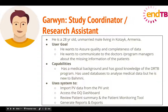The next persona is Garvain, a 28-year-old study coordinator based in Kotayk, Armenia. His main goal is to assure quality and completeness of data, communicating to doctors and program managers about any missing data. He has a medical background and sound knowledge of the DR-TB program, has used databases for analyzing medical data, but is new to Bahmni. He uses the system to import data from the PV unit, access the DQ dashboard, patient summary, and patient monitoring tool, and generate reports and exports.